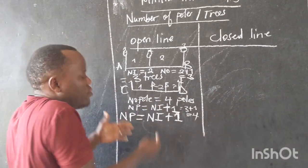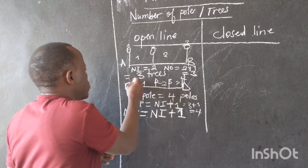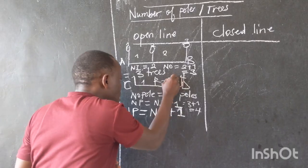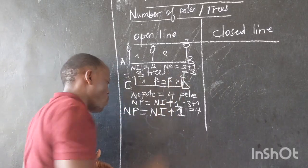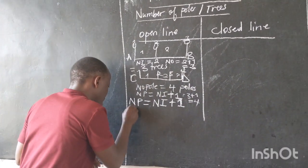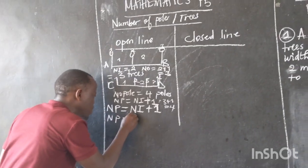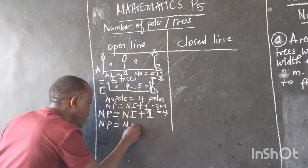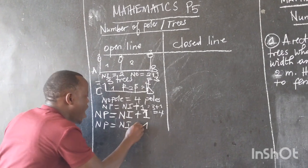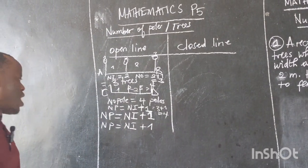If we count those poles here, you may find that there are four. One, two, three, four. And that's why we say the number of poles is equal to the number of intervals plus one. This is the formula.